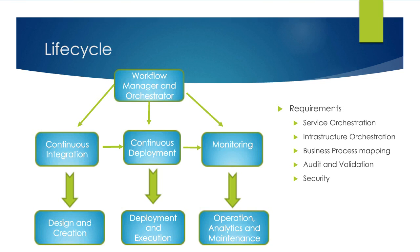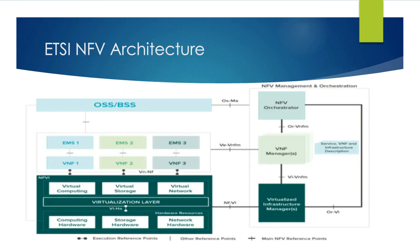This is the ETSI NFV architecture. NFV architecture is a standard body definition for how network function virtualization needs to be structured. You have the NFVi layer (virtualization infrastructure), the VNF layer, and the OSS-BSS layer, plus NFV management and orchestration. If you have a microservice-based VNF, you cannot just deploy it anywhere — the underlying NFVi must support it, the underlying orchestrator must support it, and the management and orchestration layer must support it.